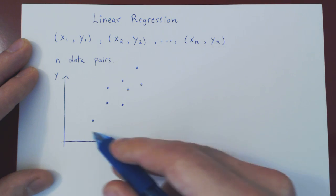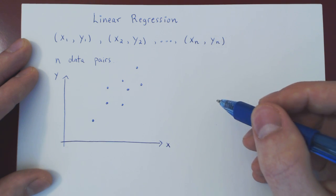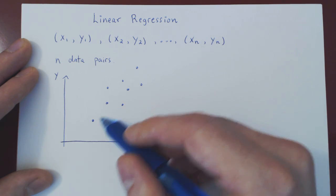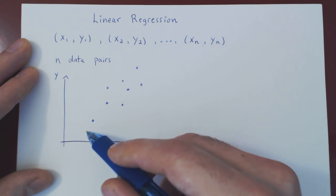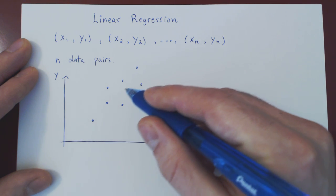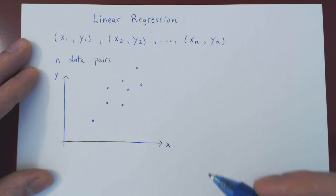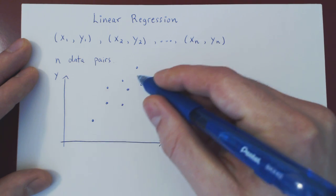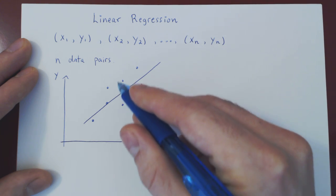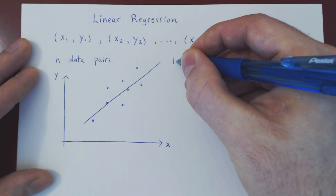Suppose your scatter diagram looks something like this. Given an x value, you have the corresponding y value. The question is: can you somehow find the equation of a line that will pass through this scatter diagram closest to the points on average? The answer is yes, and not only yes, but this line is unique. There is a unique line you can draw across your scatter plot that will pass on average closest to all the points. This line is called the line of least squares, and on average it looks like we're pretty close to all the points.